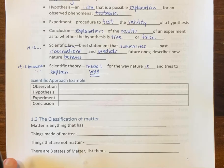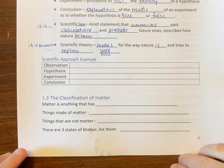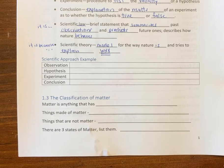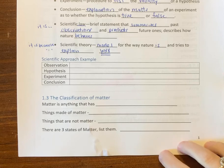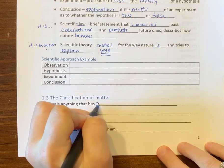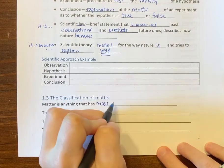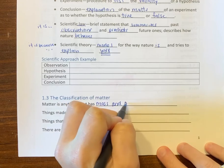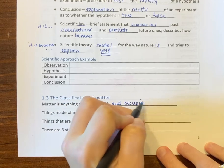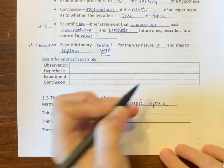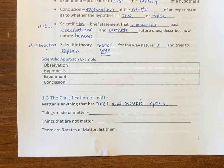Moving on to section 3, we're going to talk about the classification of matter. This is something you've probably done before. Matter is defined as anything that has mass and occupies space, so it has mass and volume.